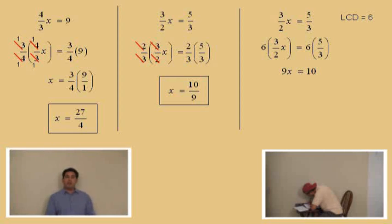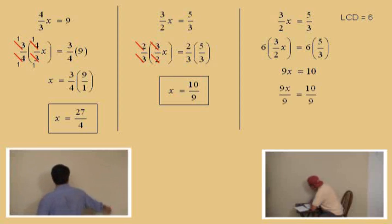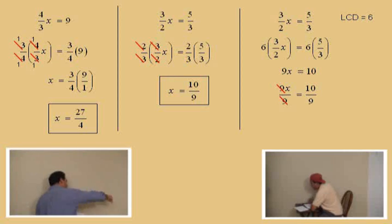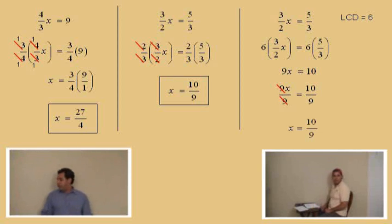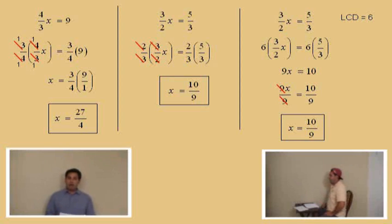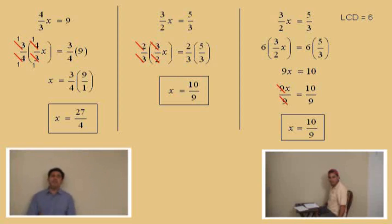Now it's just a matter of solving for x by dividing both sides by nine. The nines cancel to give one x, so we get x equals ten ninths. Don't forget to box your answer. We'll continue in part two with this clearing fractions technique — kung fu math. Stick around, and don't forget to do your homework!